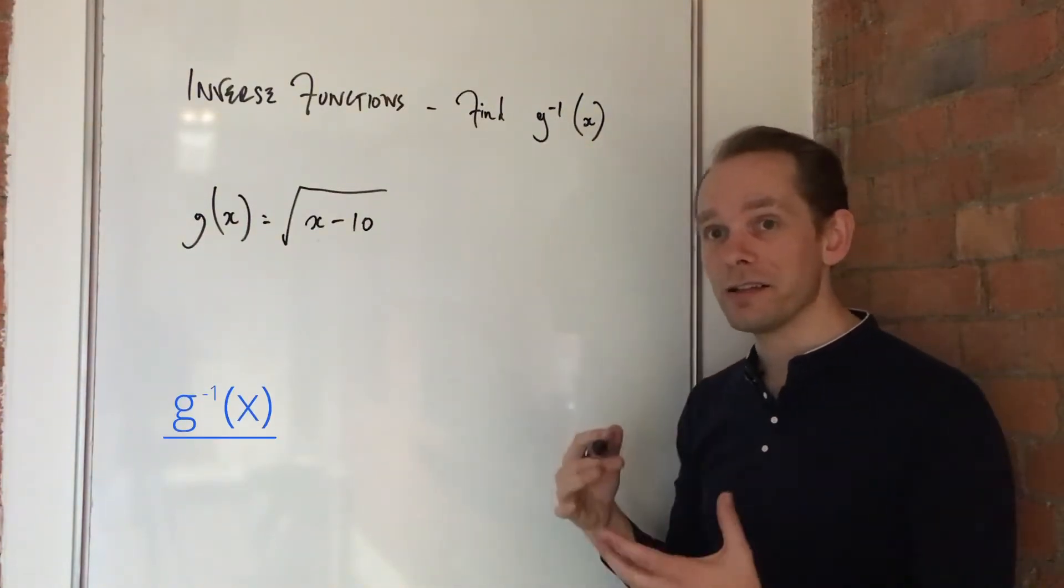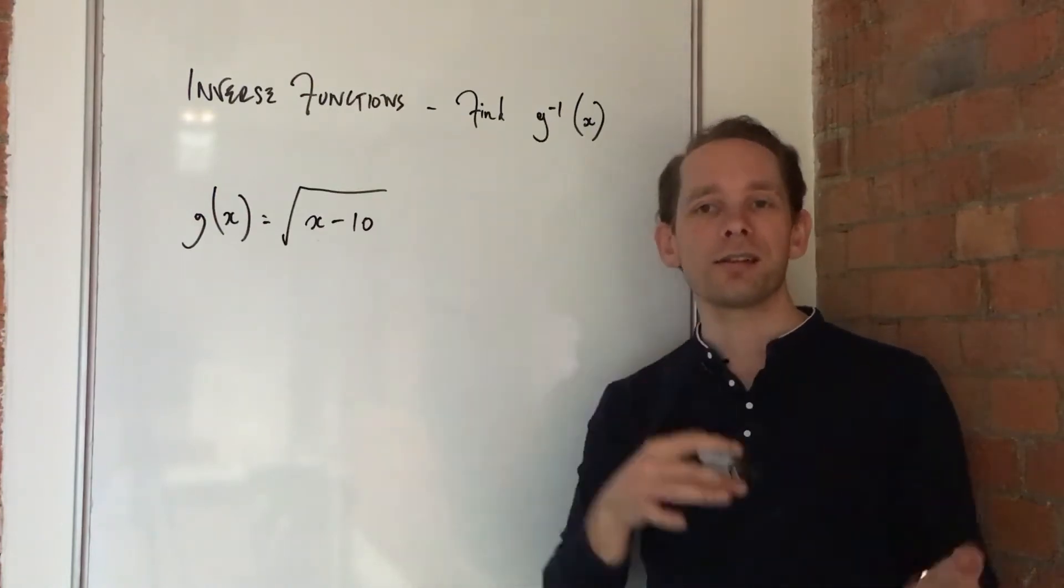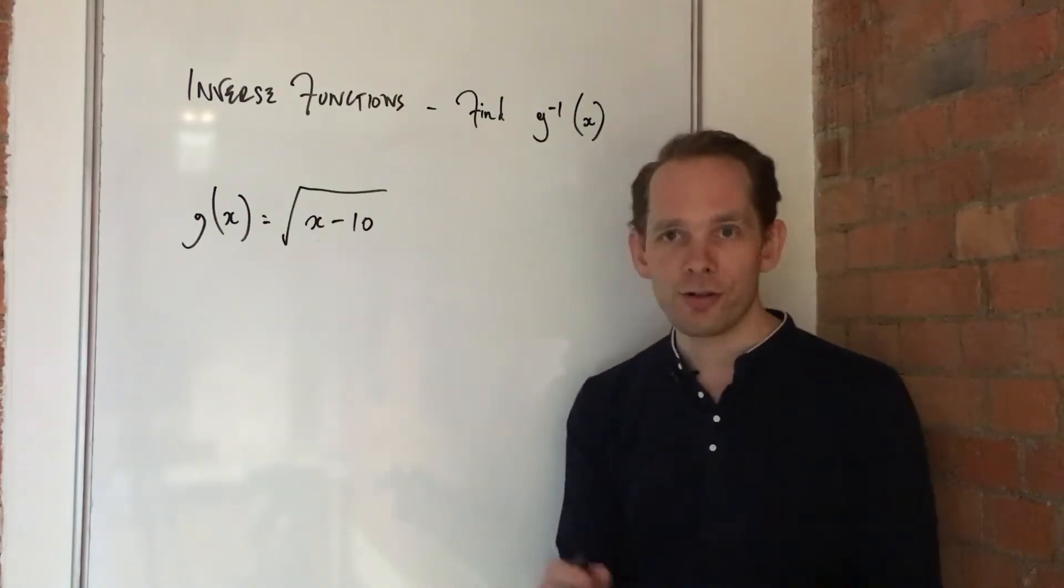The idea is that the inverse should return your answer back to the question. So it undoes the function. So how to do it?